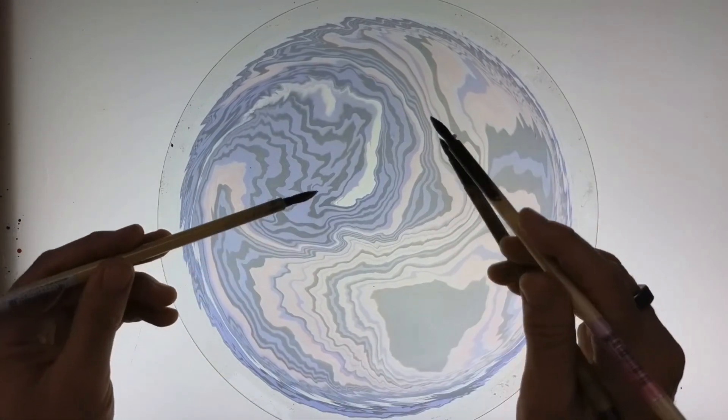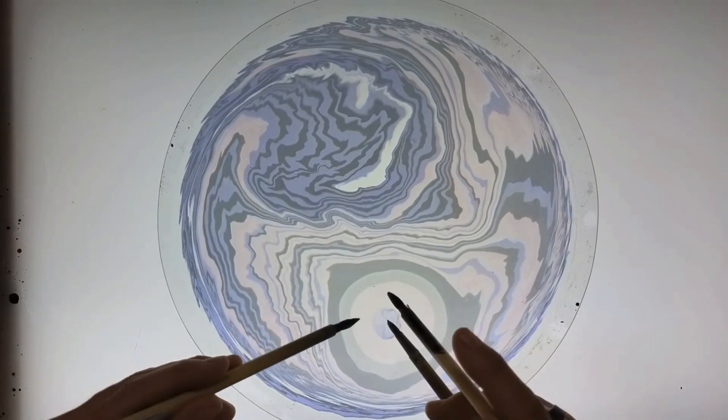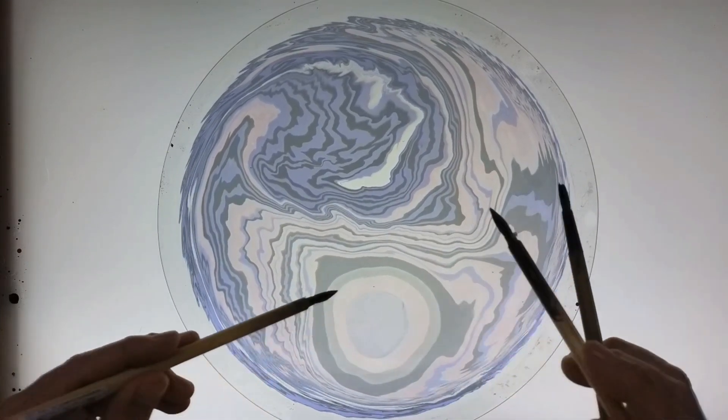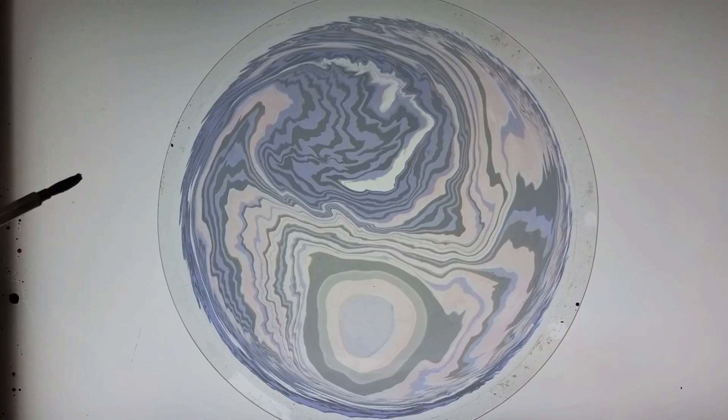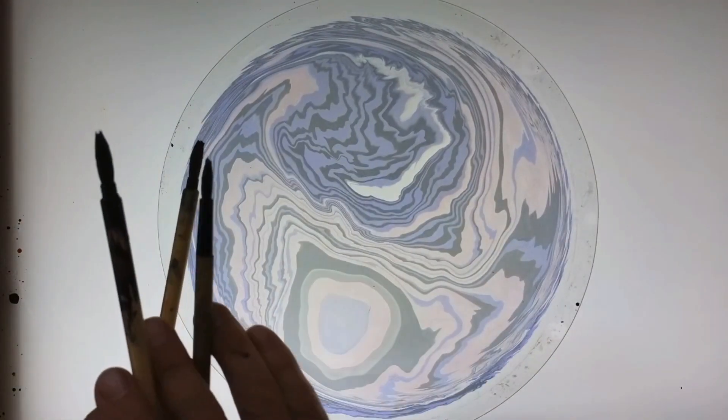And maybe if we bring a little bit of something in the center here. Oh, that's nice. Like a little moon hanging out right there in the center. Let's grab it before it changes too much.